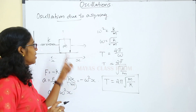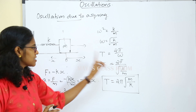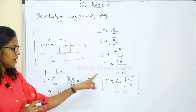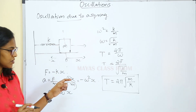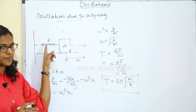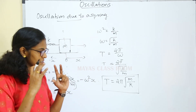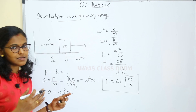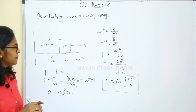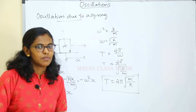The time period of oscillation due to a spring depends on the mass of the body and the spring constant. A hard or stiff spring has a larger spring constant, so a smaller time period. This is an example of simple harmonic motion.